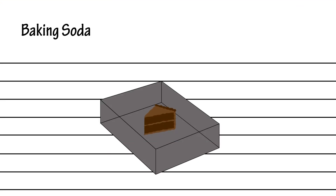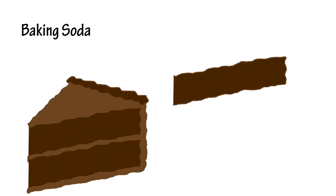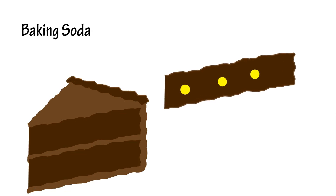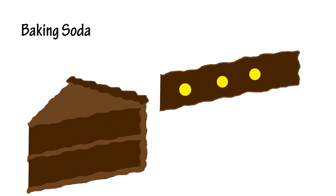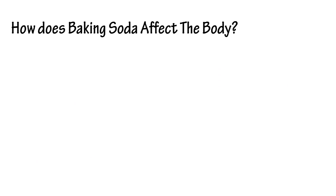Baking soda is a great rising agent. When exposed to heat, baking soda releases carbon dioxide, which if you remember from our earlier formula, I said could be pulled from that formula. This carbon dioxide release makes baked goods rise, gives them a light crumb texture, and leaves holes created by the escaping carbon dioxide bubbles.